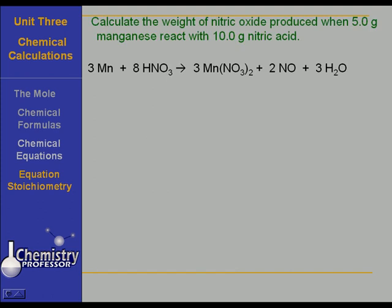Now, here's a problem. And remember, keep your tires and headlights straight. You want to calculate the weight of nitric oxide produced when 5 grams of manganese reacts with 10 grams of nitric acid. I suggest that you start with your 5 grams of manganese and find out how much nitric oxide, that's NO, could be produced. And then do the same thing with your nitric acid. And let me show you why.